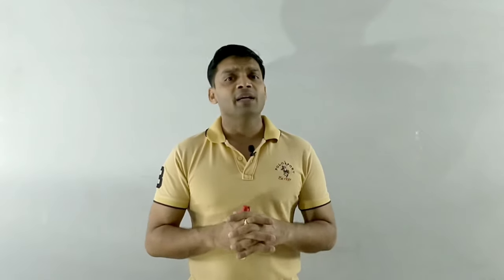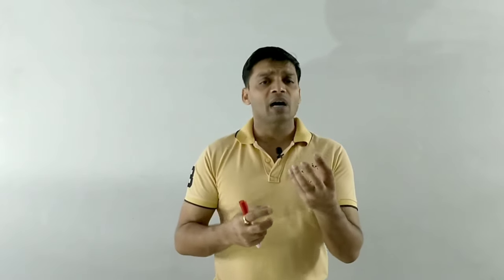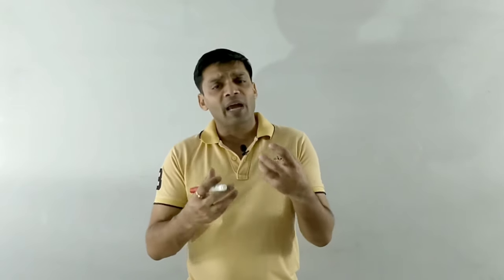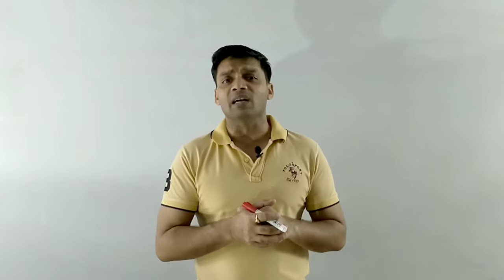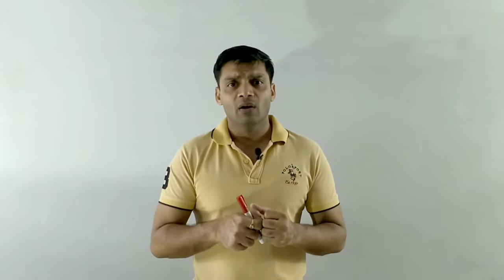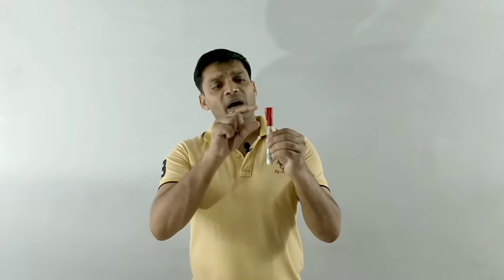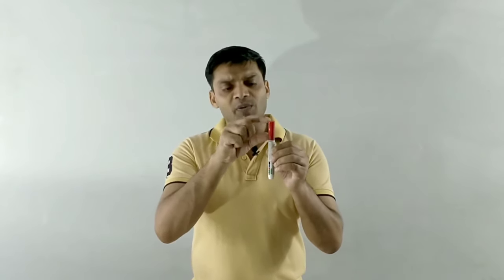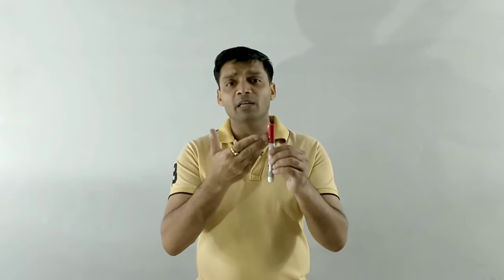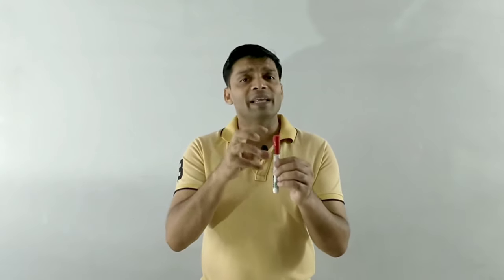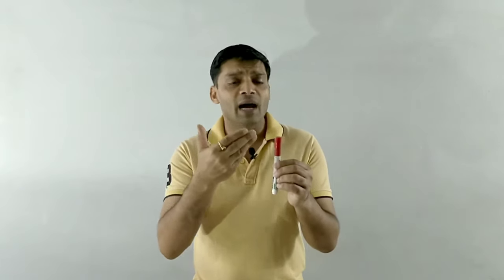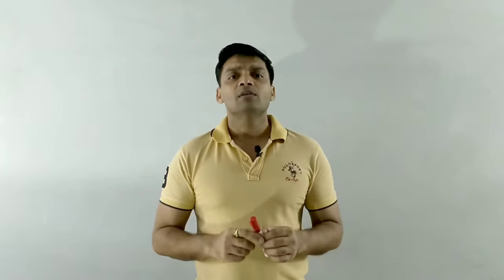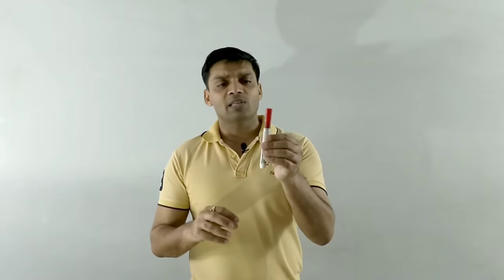In order to understand the concept of reflection, let us understand why we observe certain colors around us. We have so many objects, and every thing has a specific color — so why do we have the ability to identify colors? For example, I have this marker. We are observing it as red in color, so why is it not appearing to be of some other color?